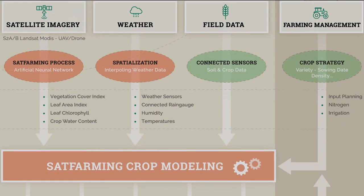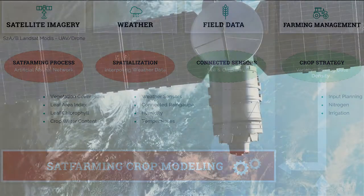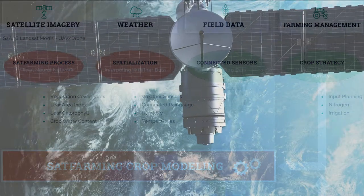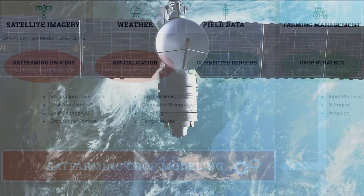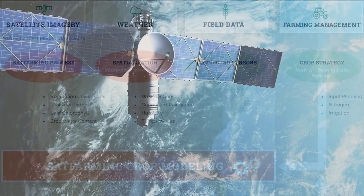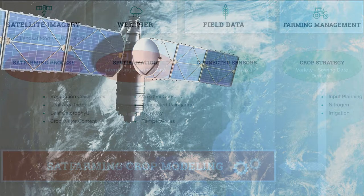The system is built on two software compartments: one about remote sensing data from satellite imagery, and one about crop modeling. The remote sensing brick is based on Sentinel-2 satellite, using free images from the European Spatial Agency.